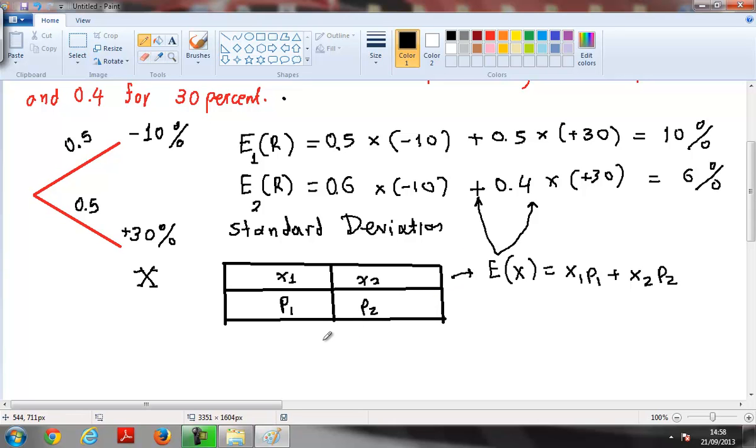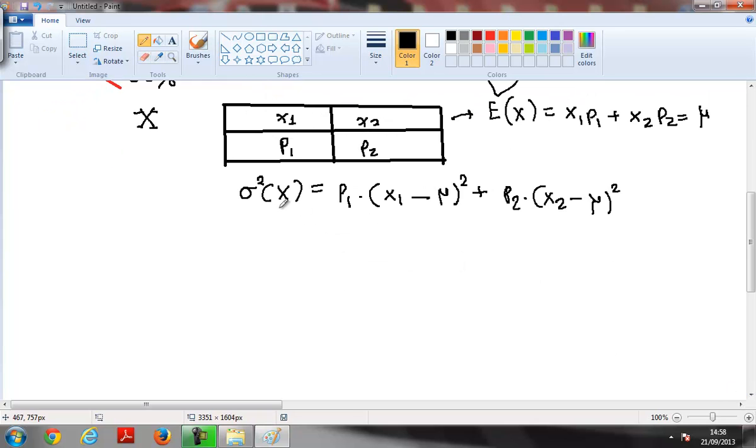Now, if I want to find the variance or the standard deviation that's the square root of the variance, I must take the formula sigma squared of x equals p1 the probability times x1 minus mu, the mean value that I found before, minus mu squared plus p2 times x2 minus mu squared. So that's the formula that I have to follow to find the standard deviation of the return of my portfolio.